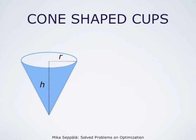Cutting the cone open and flattening it to a sector of the disc works in the following way. We consider a cone whose top is a circular disc of radius r and whose height is h. We observe that every point on the circle of radius r bounding the cone lies at the distance square root of r squared plus h squared from the vertex of the cone.